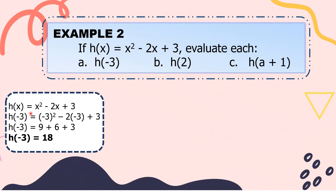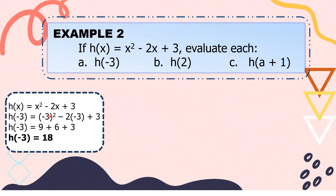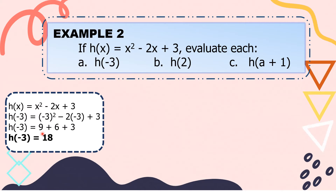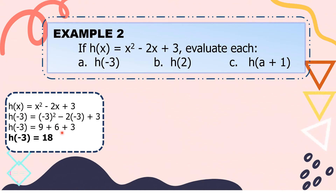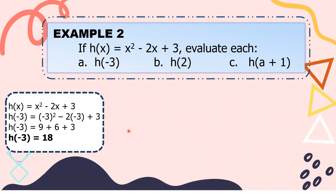We substitute all x's with negative 3. So h of negative 3 equals negative 3 squared minus 2 times negative 3 plus 3. Negative 3 squared is positive 9; negative 2 times negative 3 is positive 6; bring down plus 3. Simplifying further, 9 plus 6 plus 3 is equal to 18. Thus, h of negative 3 is equal to 18.